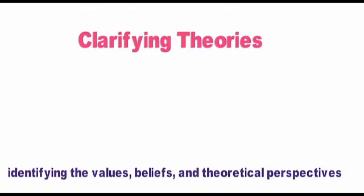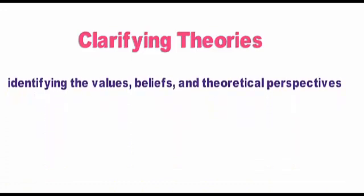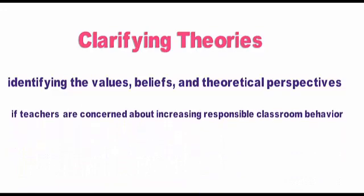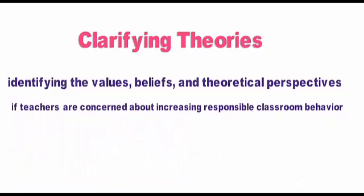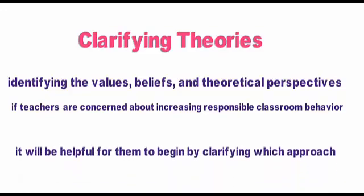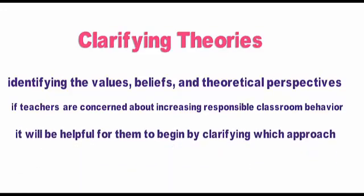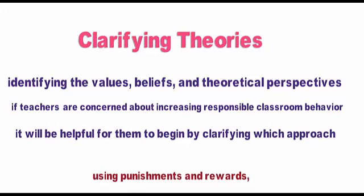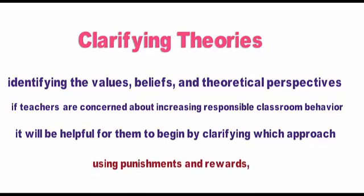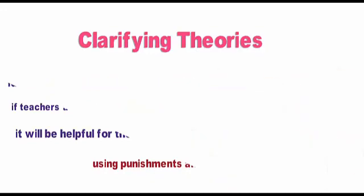Step 2: Clarifying Theories. The second step involves identifying the values, beliefs, and theoretical perspectives the researchers hold relating to their focus. For example, if teachers are concerned about increasing responsible classroom behavior, it will be helpful for them to clarify which approach—using punishments and rewards, allowing students to experience natural consequences of their behaviors, or some other strategy—they feel will work best in helping students acquire responsible classroom behavior habits.